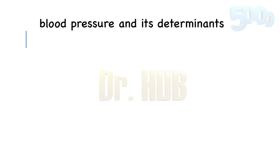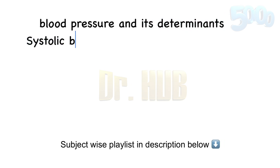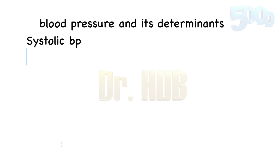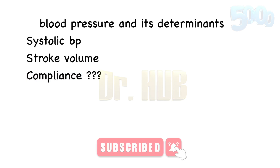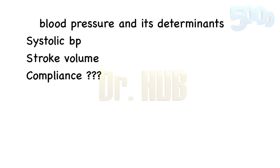The first determinant is systolic BP, also known as SBP. Its determinants include stroke volume, which is directly proportional, and the compliance of the aorta, which is inversely proportional to systolic blood pressure.